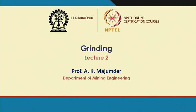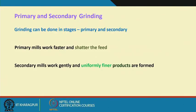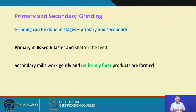We are discussing about grinding. Even in crushing, in grinding we have primary grinding and secondary grinding. We do it in stages to minimize the generation of fines. Primary mills work faster and try to handle the feed, and the secondary mill is like fine tuning — they work gently and uniformly, forming finer products. That is the aim of primary and secondary mills.